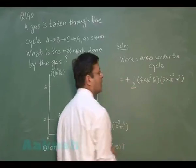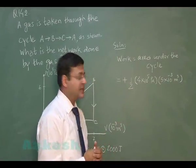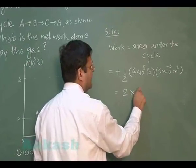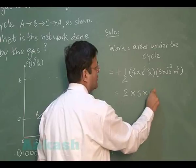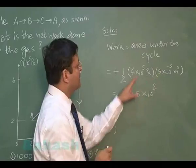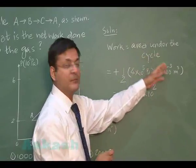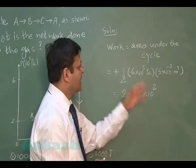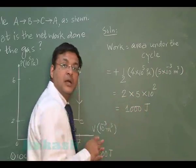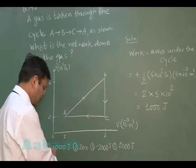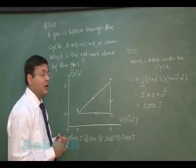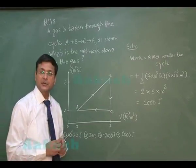All quantities are in SI units. We get: (4/2) × 5 × 10⁵ × 10⁻³ = 2 × 5 × 10² = 1000 joule. The most appropriate answer is the first option.